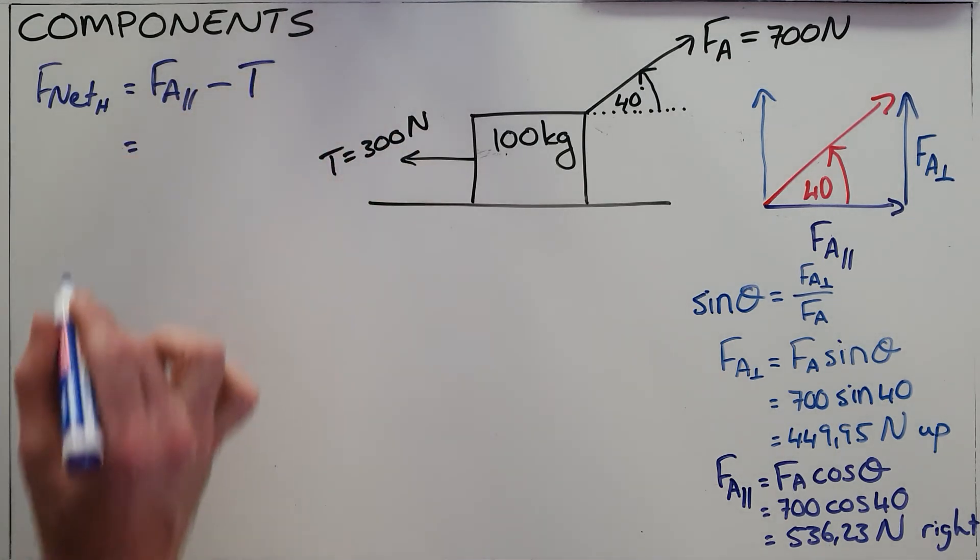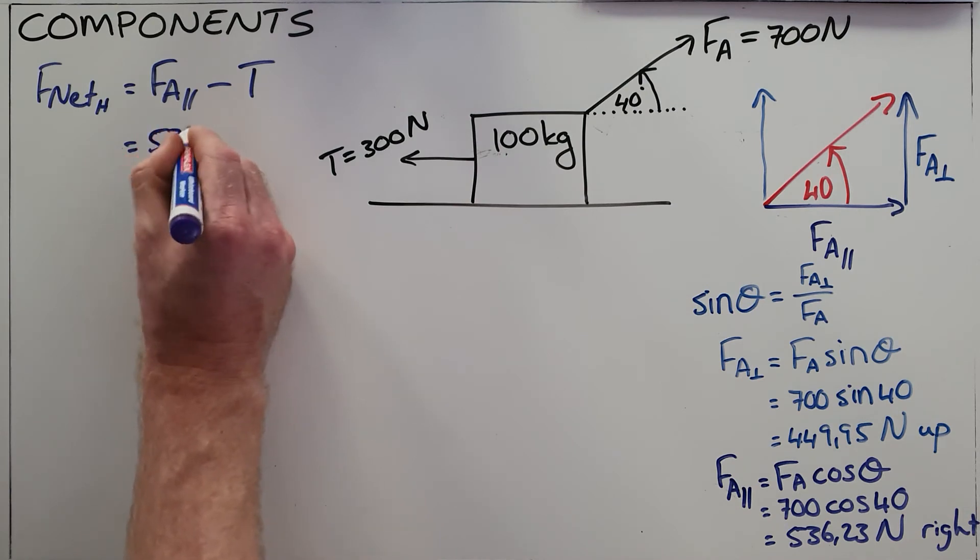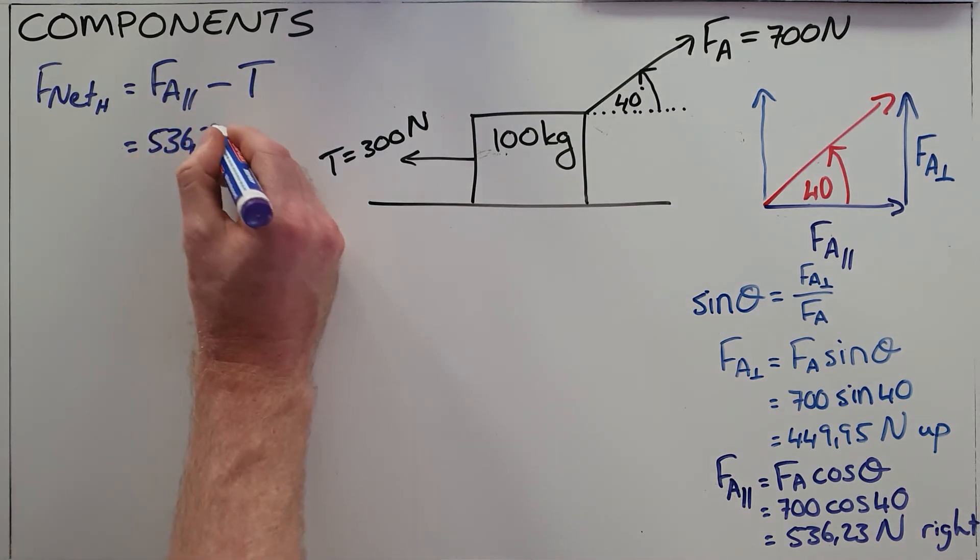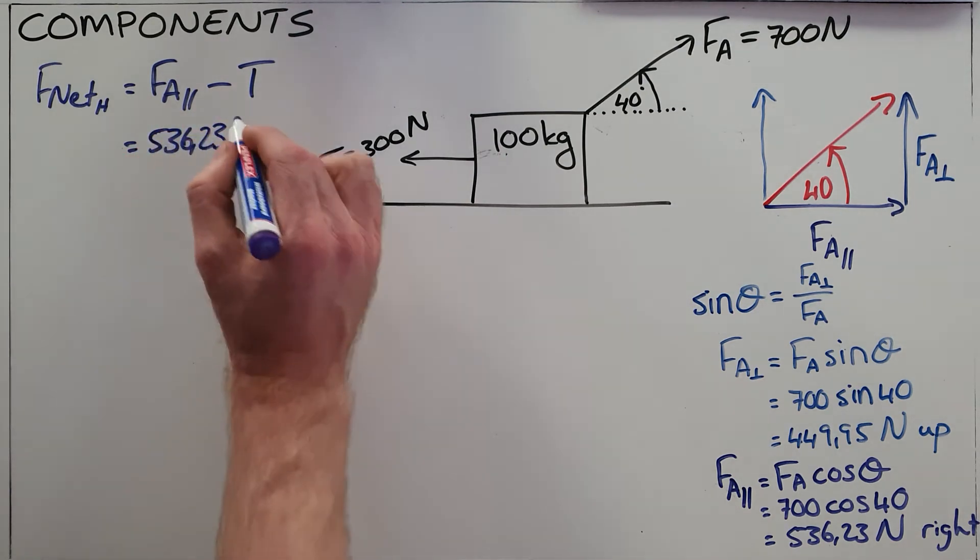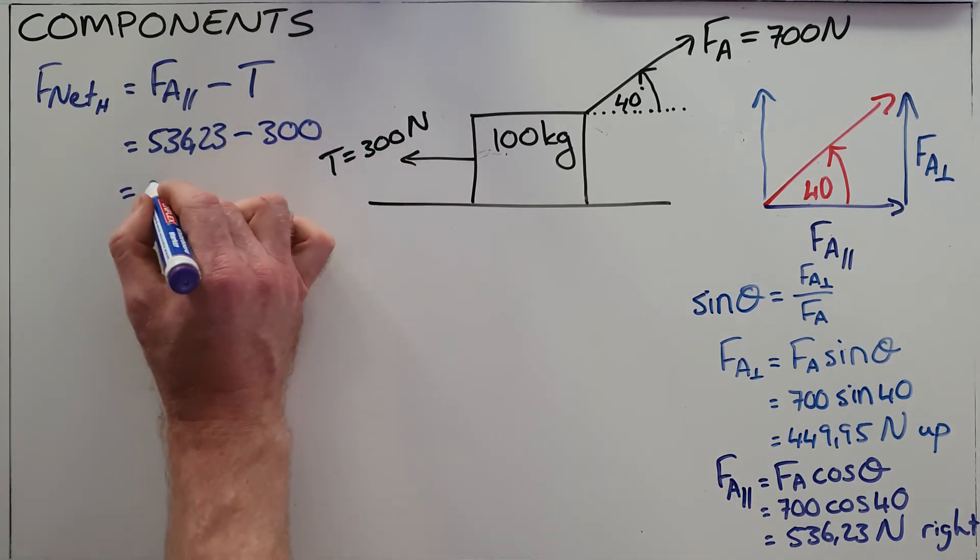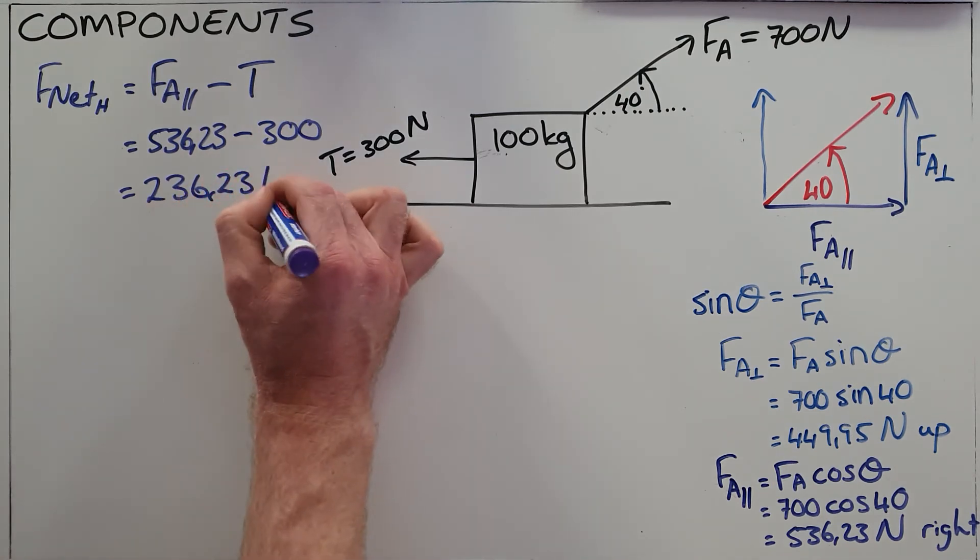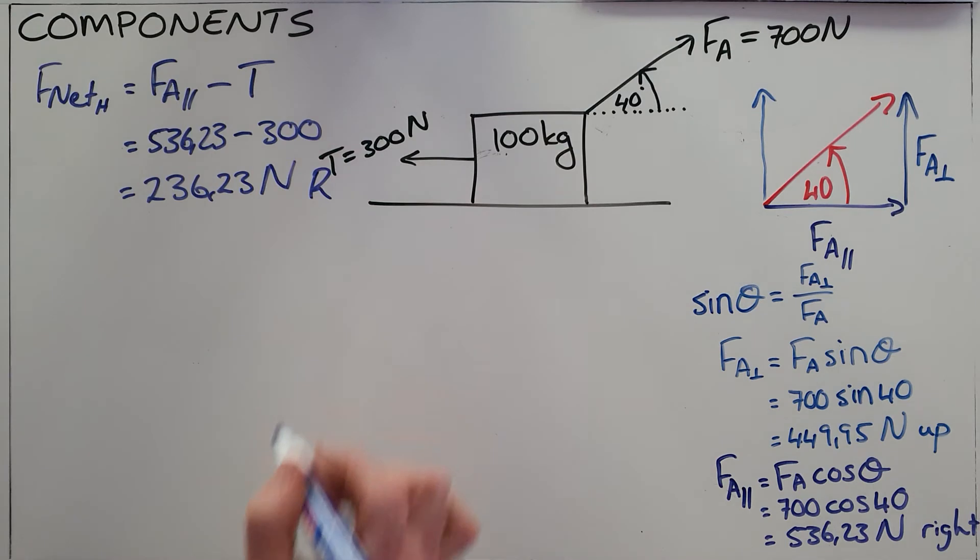We can calculate the net horizontal force and see that that is 536.23 newtons acting to the right, minus the 300 newtons acting to the left, so there is a net force of 236.23 newtons acting towards the right.